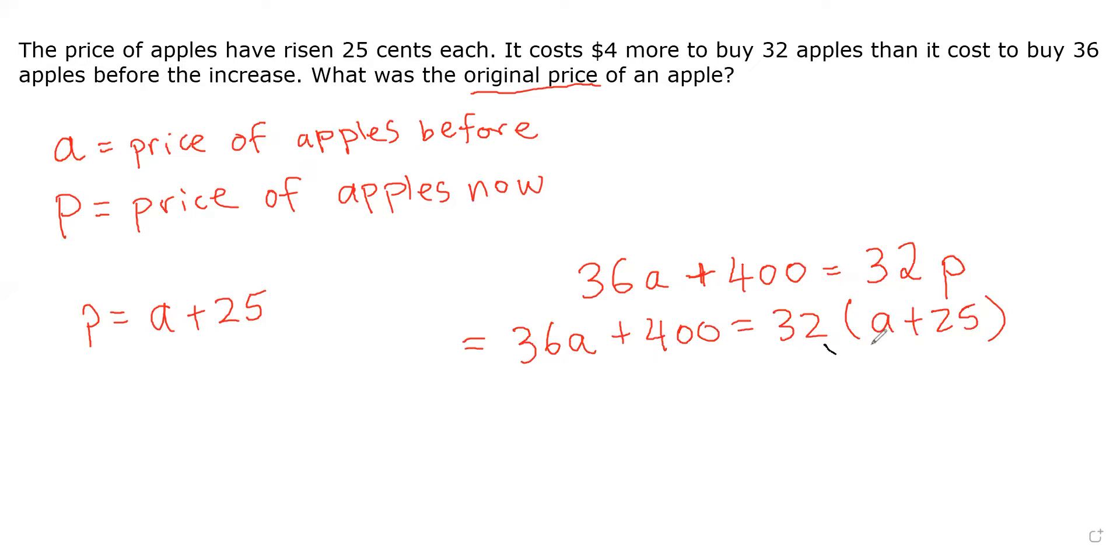We need to distribute this 32 inside the bracket and we get 32A plus 32 times 25. Well, for every four 25s, you have 100. 4 goes into 32 eight times, so therefore it's 8 times 100, so you get 800.